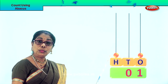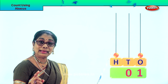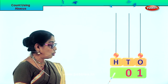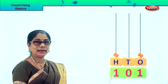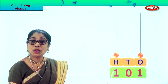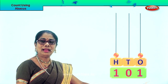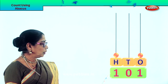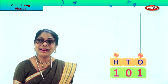In the 100s place we have just 1 beat — that is 100. So we put down 1 here; 1 beat is 100. Let's read the number: 1, 100, 1. How do we read this number? 1, 100, 1.